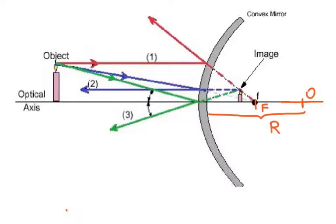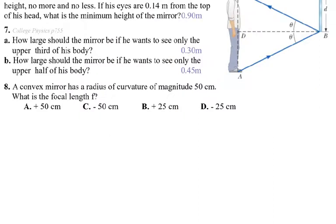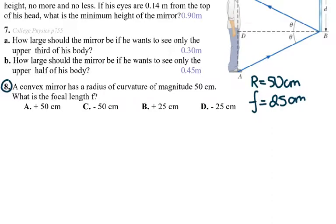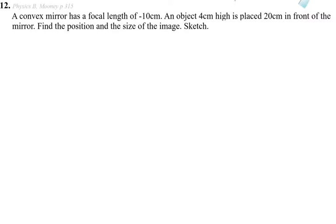Let's look at the examples. I'm going to do number eight first. For a convex mirror with a radius of curvature of 50 centimeters, the focal point is 25 centimeters — that was easy. Because it is a convex mirror, convex mirrors have an imaginary image, so we say the focal point is negative. Your focal point is going to be negative 25 centimeters.